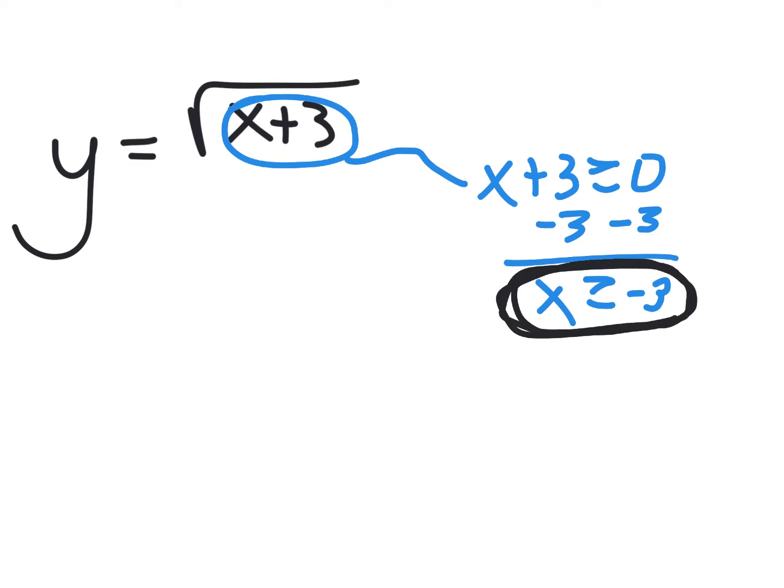The domain is what you can safely feed this function. Did you know that if you fed a dog chocolate there's a chance it'll die? You can feed some humans peanuts and they're okay, but feed other people a peanut and they're going to die. Functions are kind of like that — some functions you can feed a 3 and they're fine; other functions you feed a 3 and it'll die. What you can safely feed the function must be bigger than or equal to negative 3.